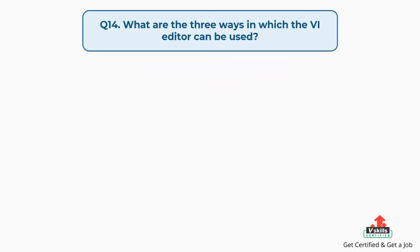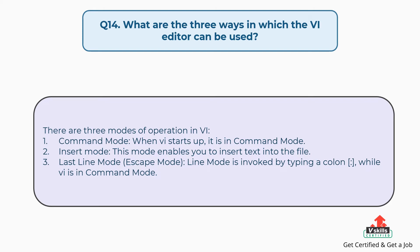Question number fourteen: what are the three ways in which the Vi editor can be used? There are three modes of operation in Vi. First, command mode — when Vi starts up, it is in command mode. Second, insert mode — this mode enables you to insert text into the file. Third, last line mode (escape mode) — line mode is invoked by typing a colon while Vi is in command mode.